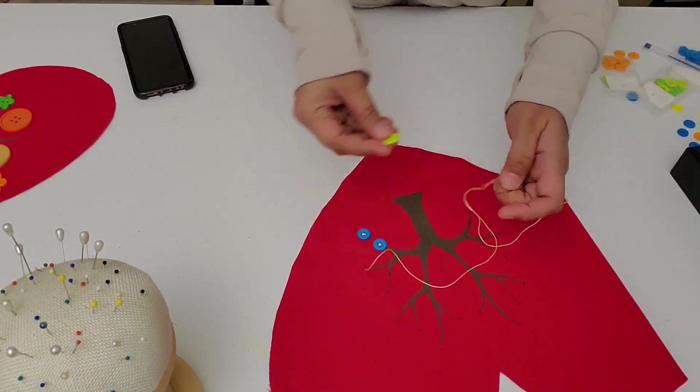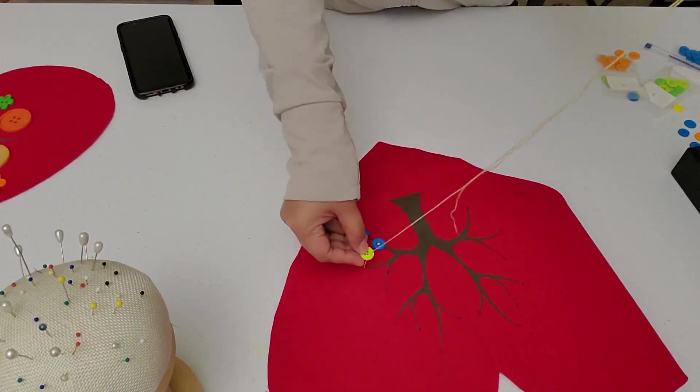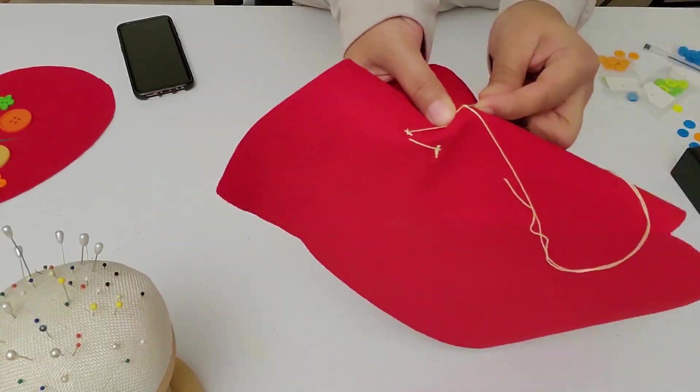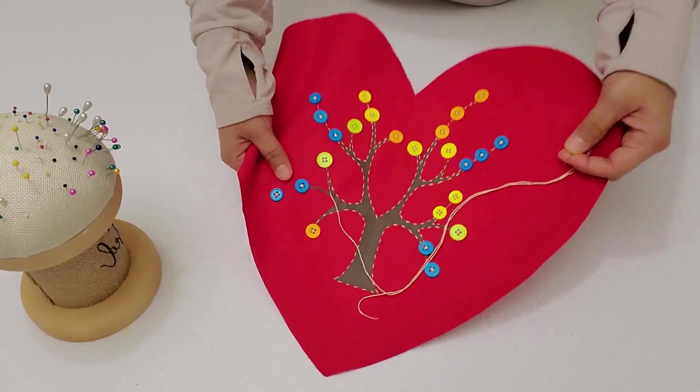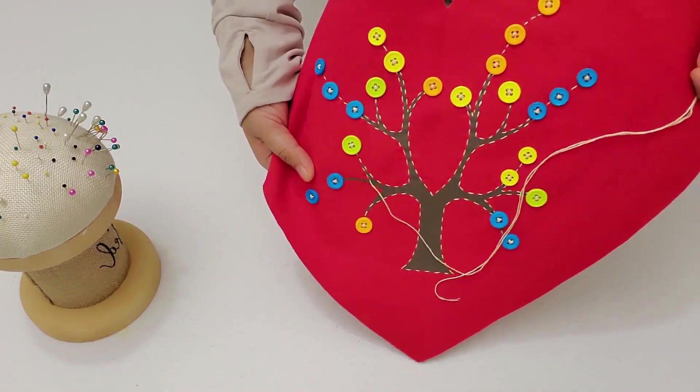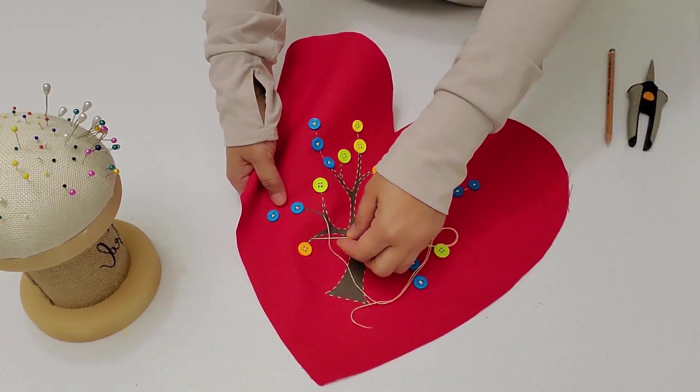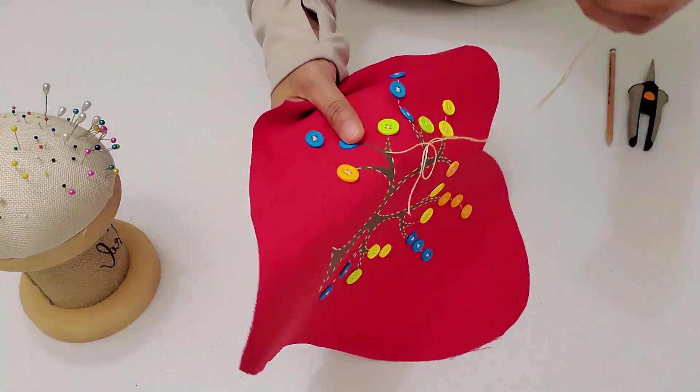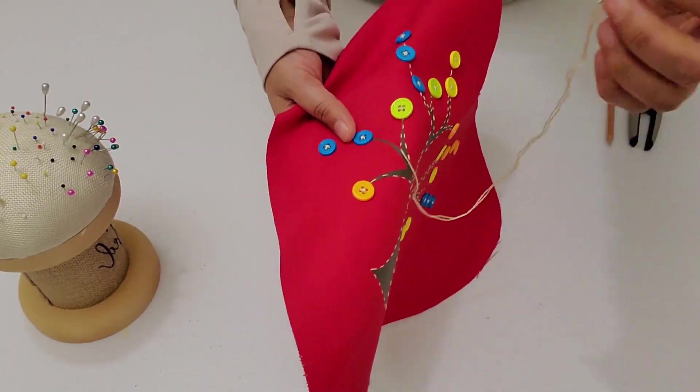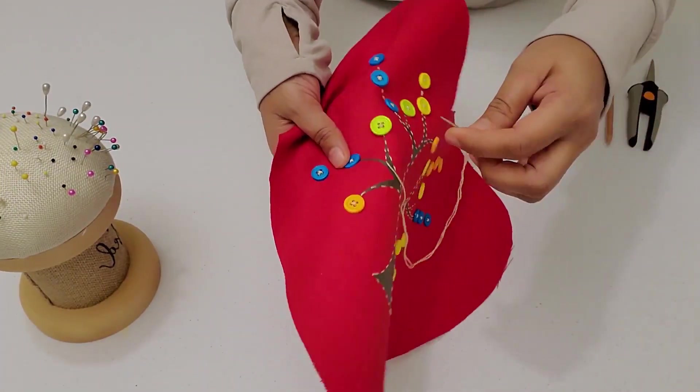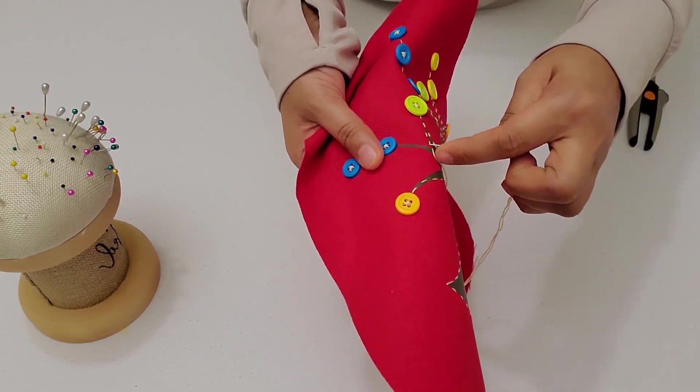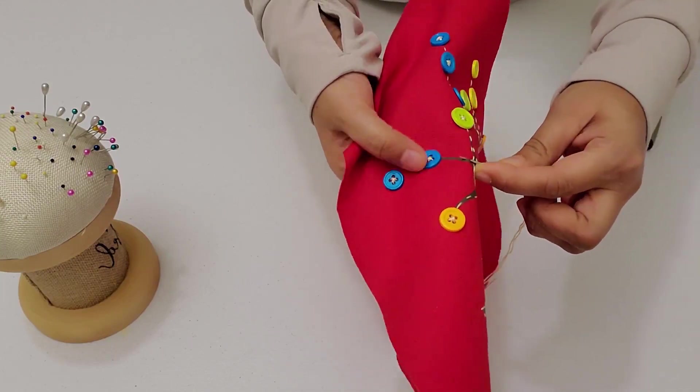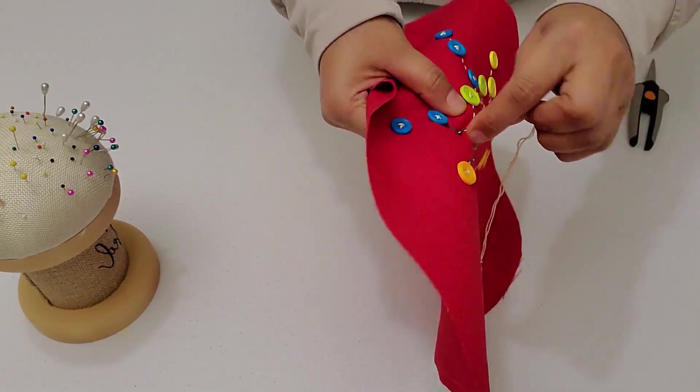We are done attaching the buttons. And you can see that I've gone ahead and done a running stitch around the trunk. I've left a small part to show you how exactly it's done. I have three strands on my needle and I will be doing the running stitch along the edges of the trunk like this.